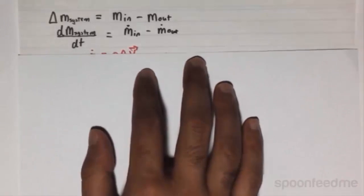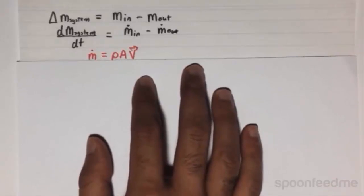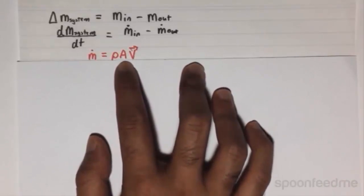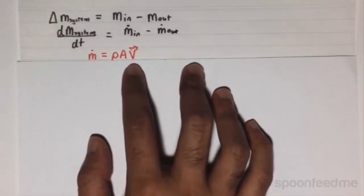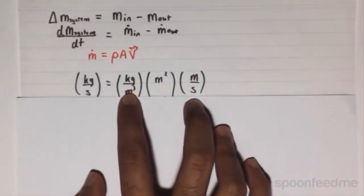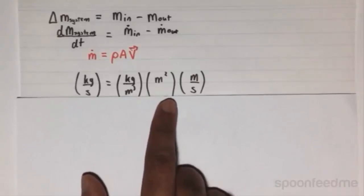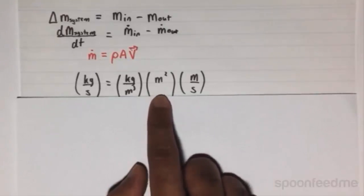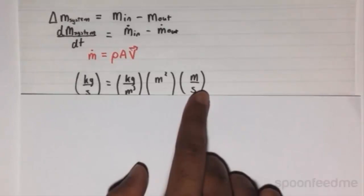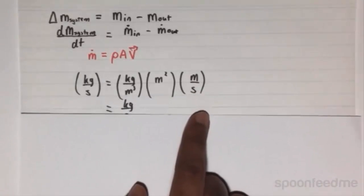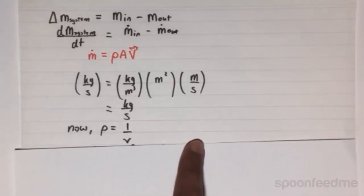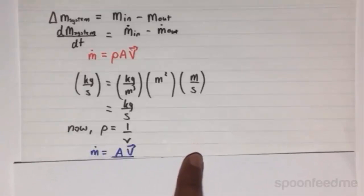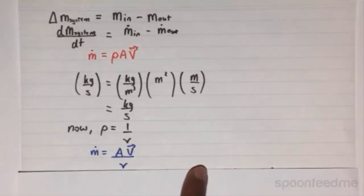The mass flow rate is given by the density times the cross-sectional area times the velocity of the substance's flow. A simple dimensional analysis will confirm this, because density is measured in kilograms per meter cubed, area is measured in meters squared, and the velocity is measured in meters per second. We know that density is just the reciprocal of the specific volume, so we can replace the equation with ṁ equals Av/v.